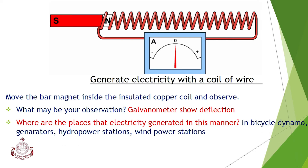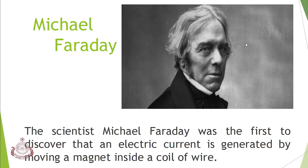Where are the places that electricity is generated in this manner? In bicycle dynamos, generators, hydropower stations, and wind power stations. The scientist Michael Faraday was the first to discover that an electric current is generated by moving a magnet inside a coil of wire.